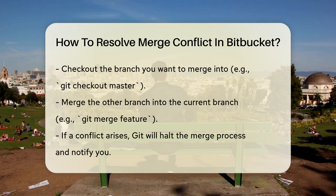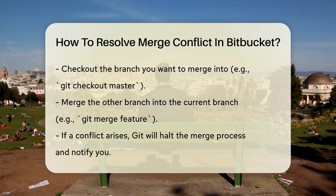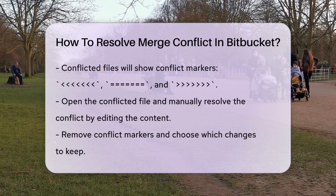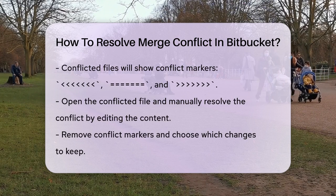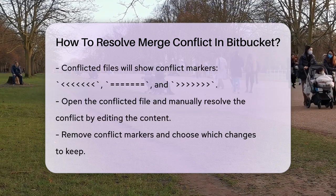For instance, if you're merging a feature branch into the master branch, you would use git checkout master followed by git merge feature. If a conflict occurs, Git will stop the merge process and notify you. You'll see conflict markers in the files where the conflicts are marked to indicate the different versions of the code.